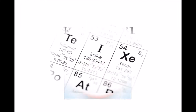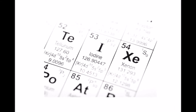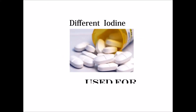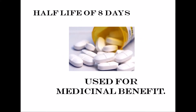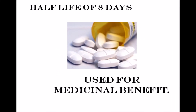Iodine-131 is a highly radioactive unstable form of iodine. There are 4 extra neutrons in the nucleus causing it to be unstable. Iodine-131 also has a half-life of just 8 days.